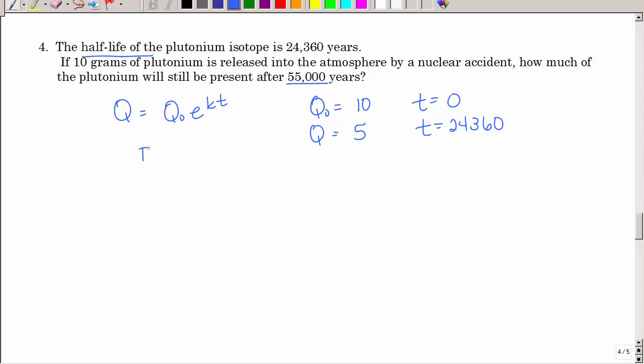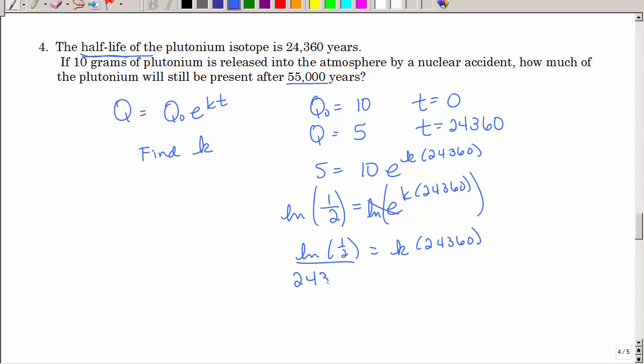So again, in order to answer the question, I need to find k, and when I find it, it should be negative because I'm decreasing. So I have 5 equals 10 e to the k times 24,360 years. So divide by 10. So in the other problems where we were doubling, now I'm getting half, and again, that ratio here is a half. So I'm going to take the natural log of both sides. That cancels.